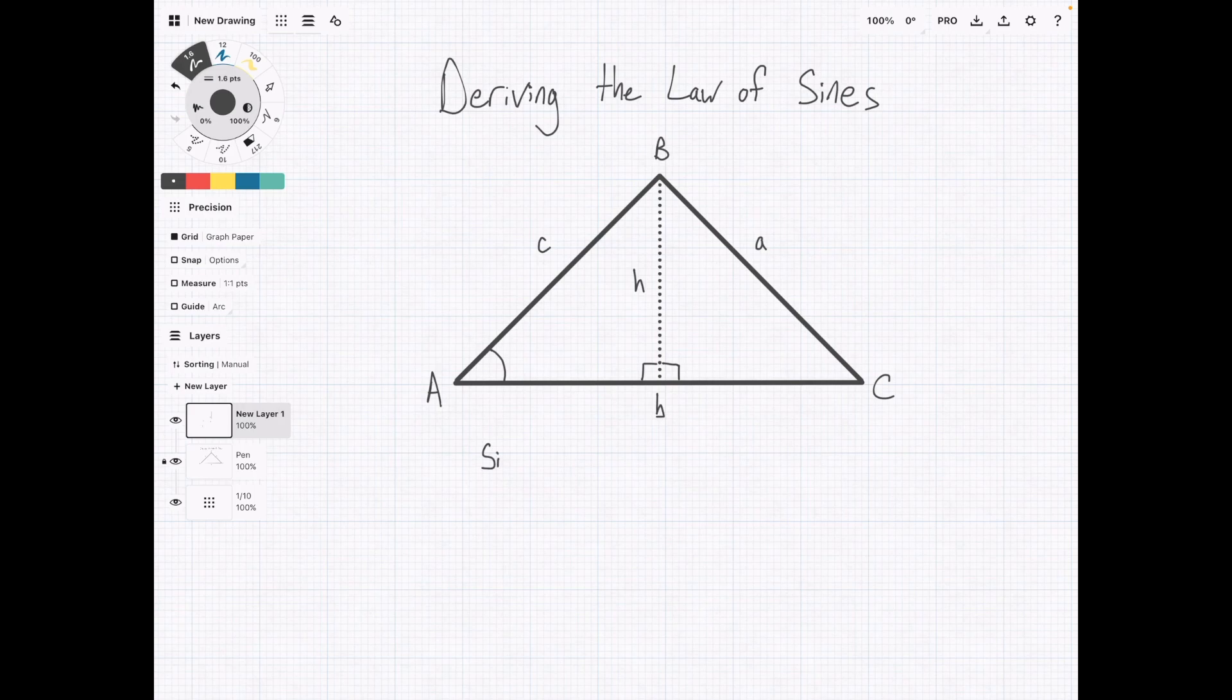We're going to find the sine of angle A that's going to be equal to the opposite side which is H over the hypotenuse which is C. Then we're going to multiply over so we're going to have C sine of A equals H. So that's step one.